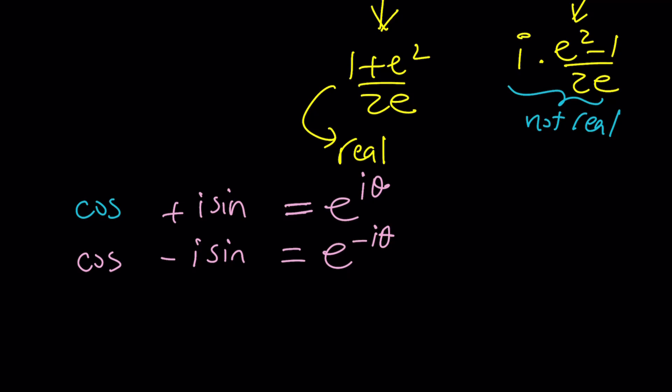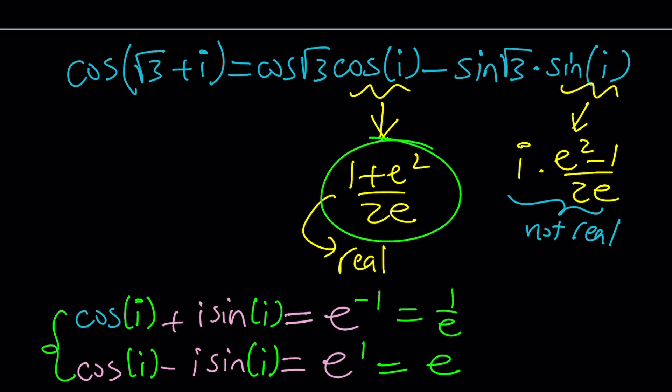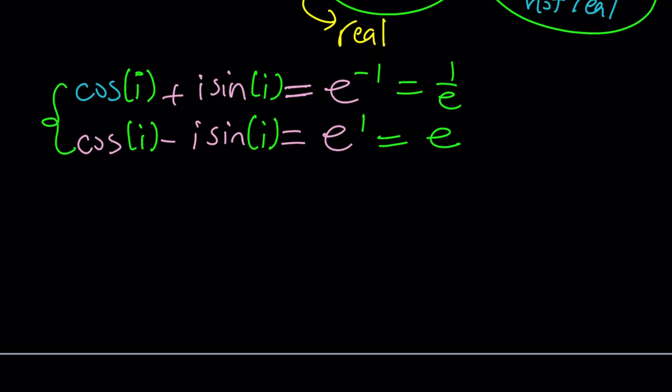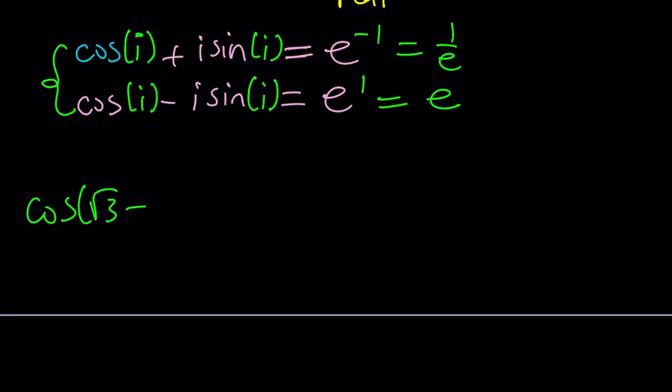So these are the identities that we get and of course if you replace theta with i then you're going to get the following. Let's go ahead and find out. You're going to get cosine of i plus i sine of i, cosine of i minus i sine of i, and on the right hand side I'm going to replace theta with i, but when I do i times i becomes an i squared and that just becomes negative 1. Isn't that cool? And this becomes a negative negative 1 or just positive 1. So this is 1 over e, this is e, and from these two equations I can find sine i and cosine i by using elimination or if you want to use substitution that is fine too.